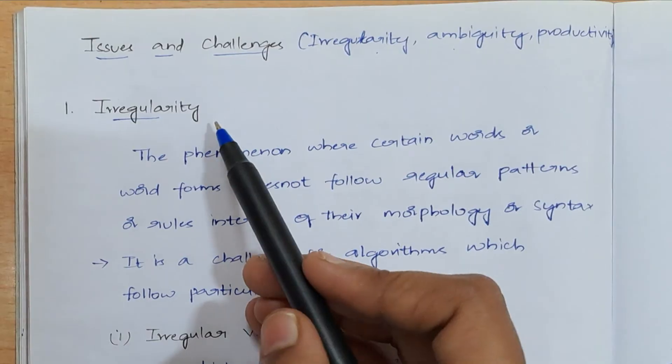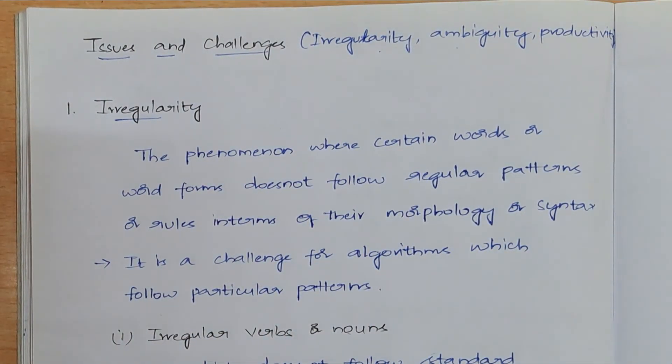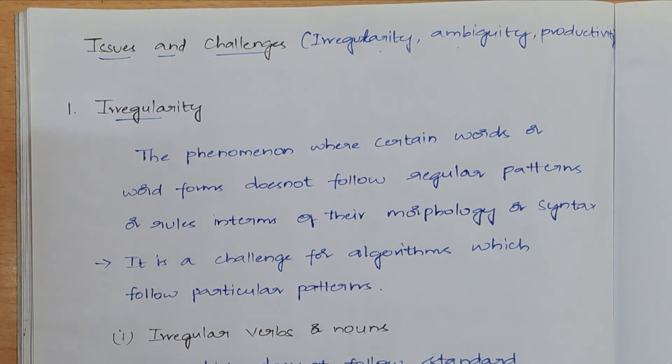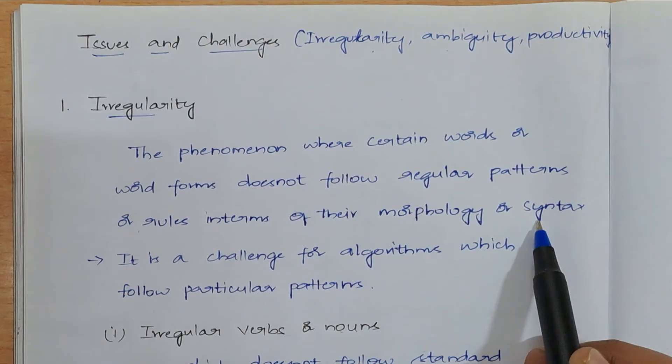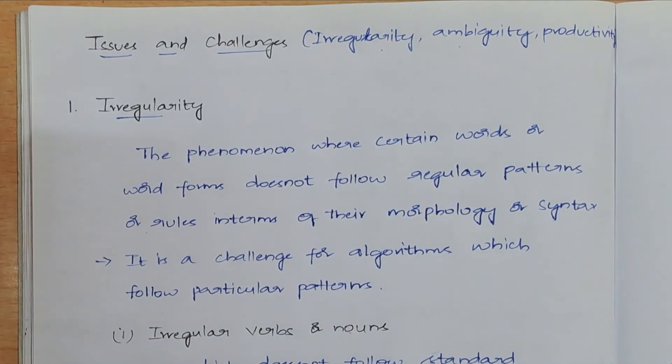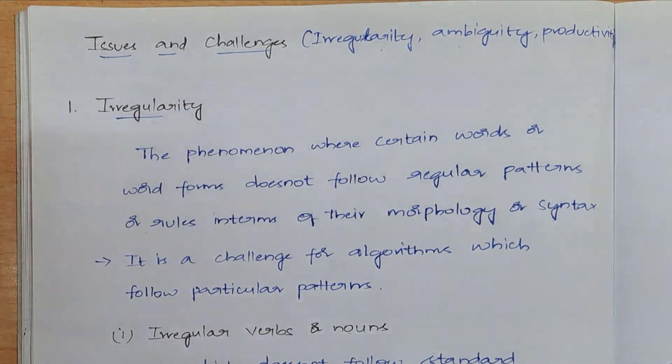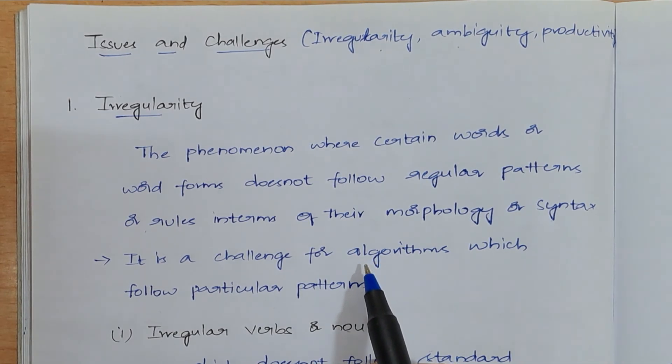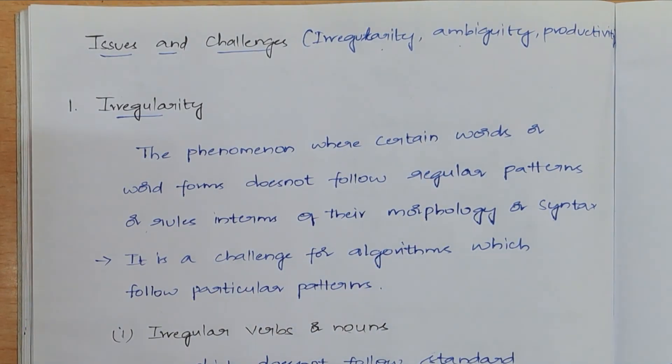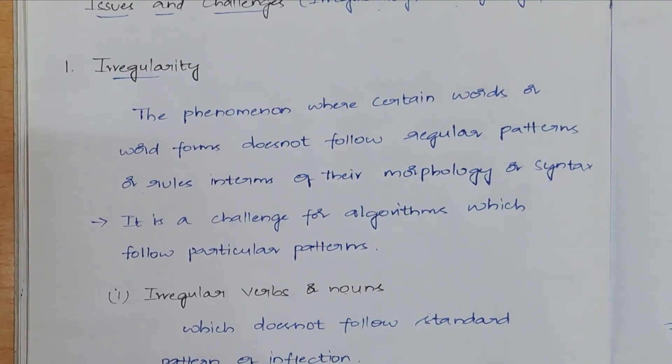First one is irregularity. What is meant by irregularity? There are certain word forms which do not follow any regular patterns or rules in terms of their morphology or syntax. These kinds of words are mainly causing irregularity. It is a huge challenge for algorithms when dealing with this kind of word forms. What are actually these word forms?